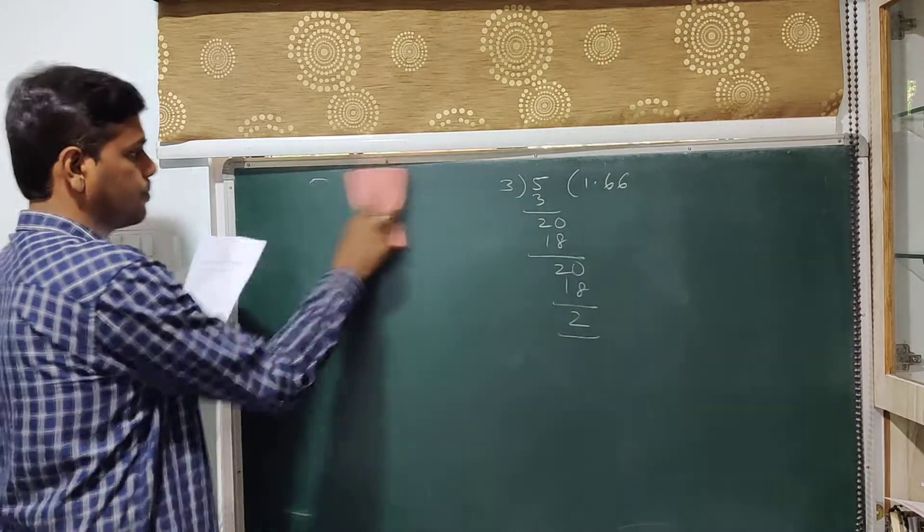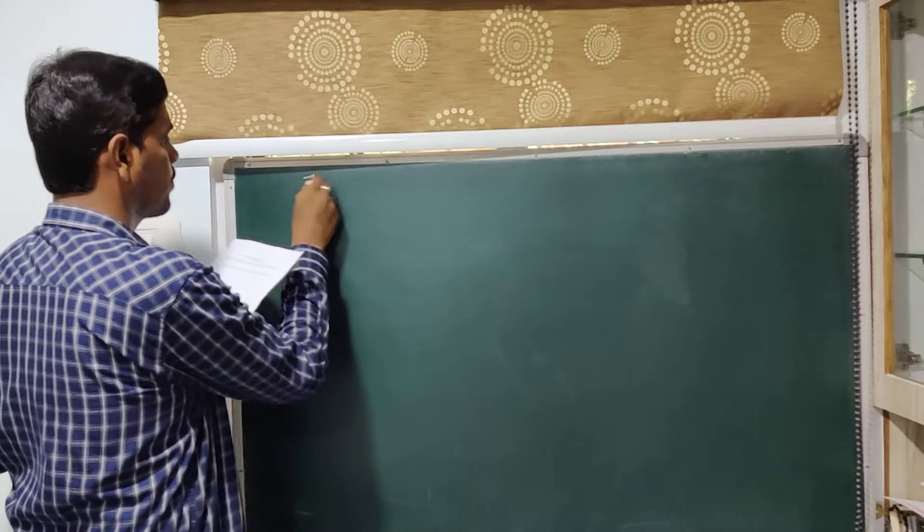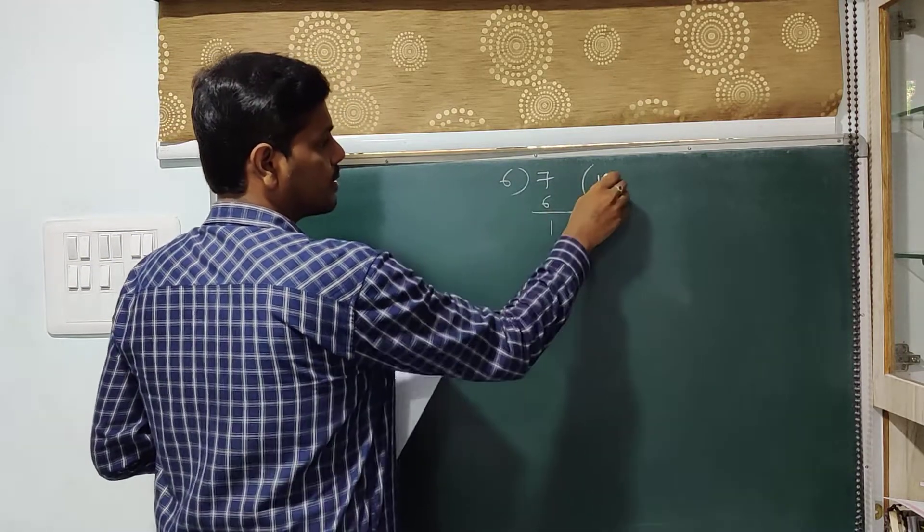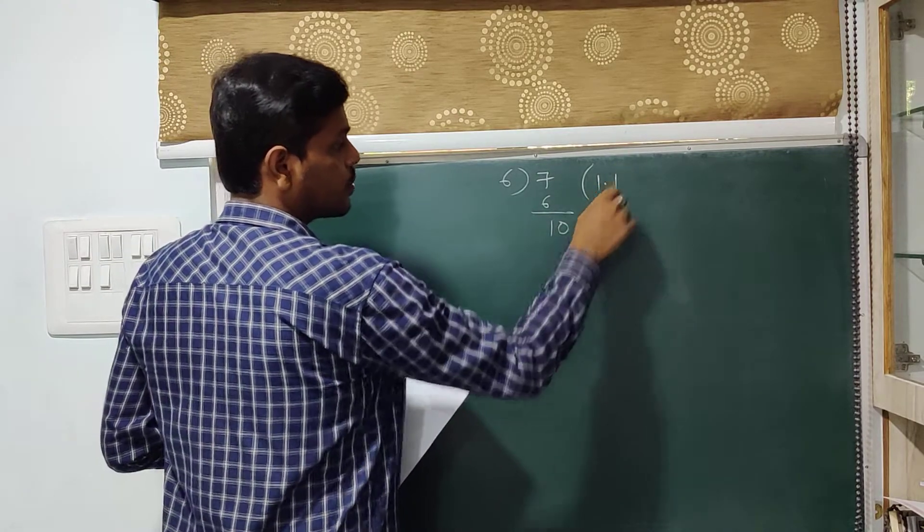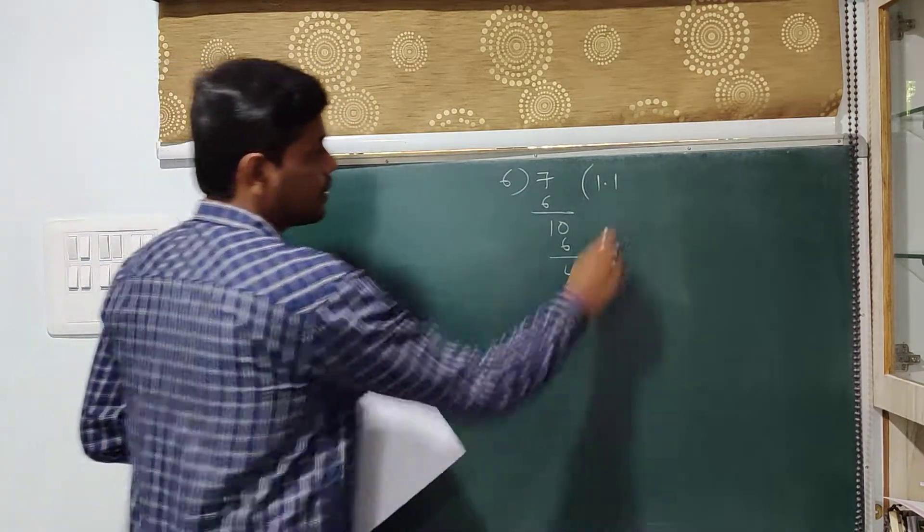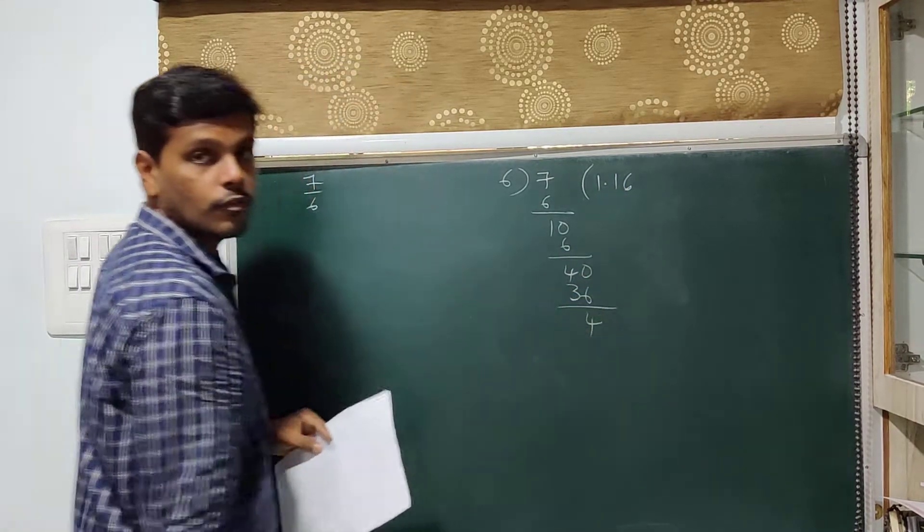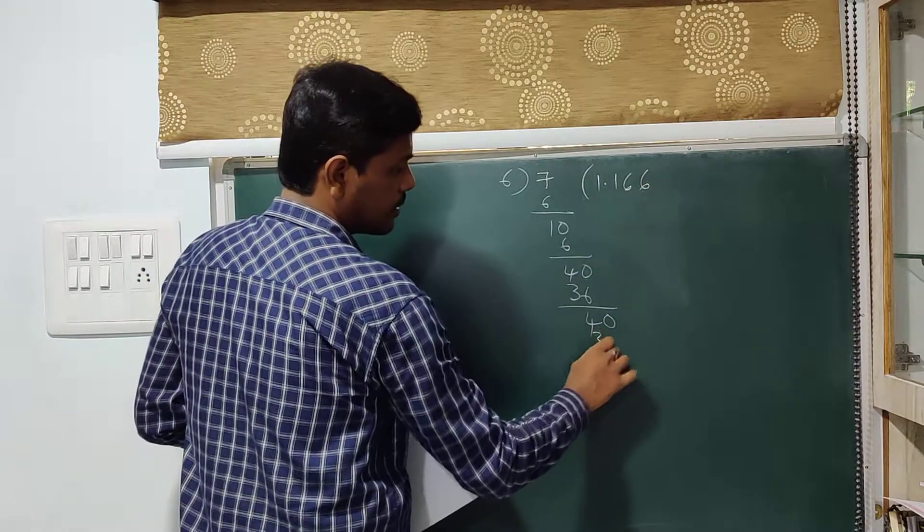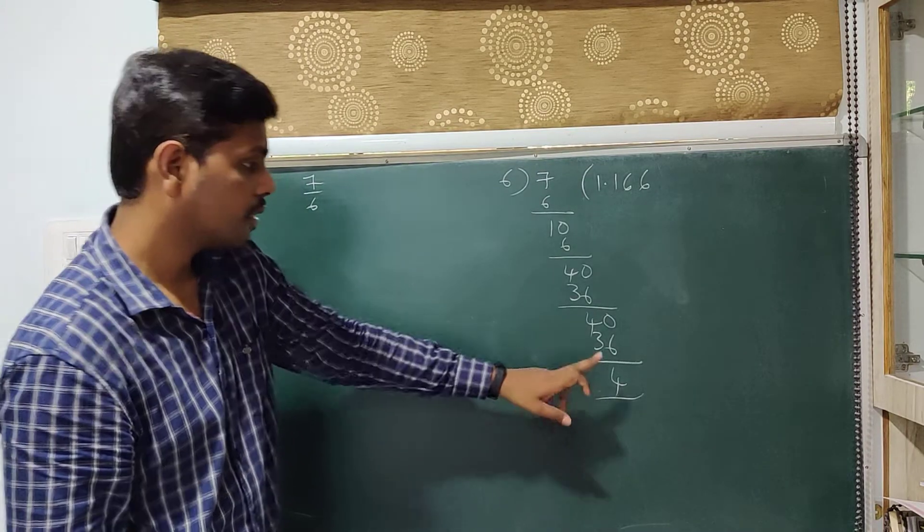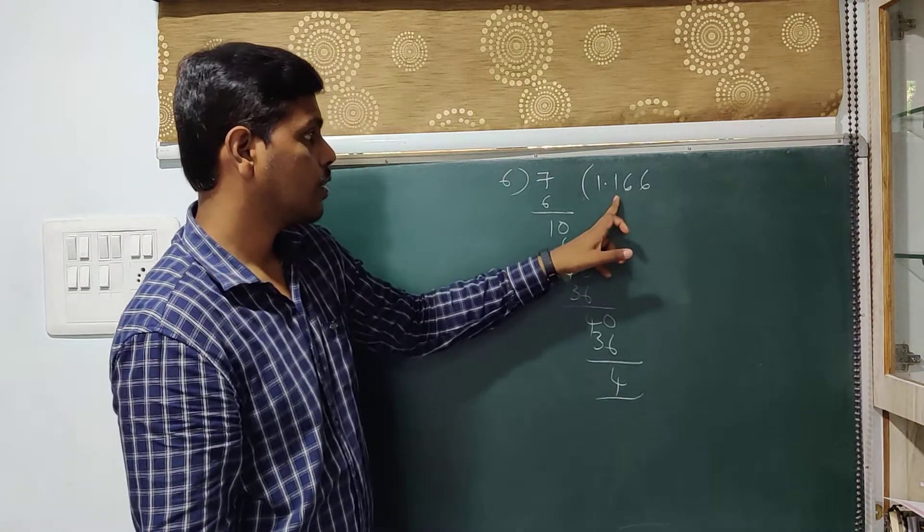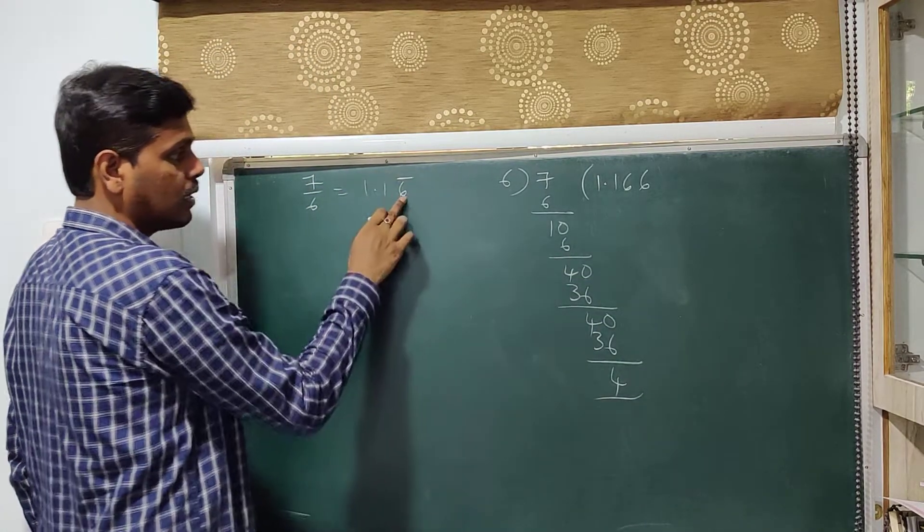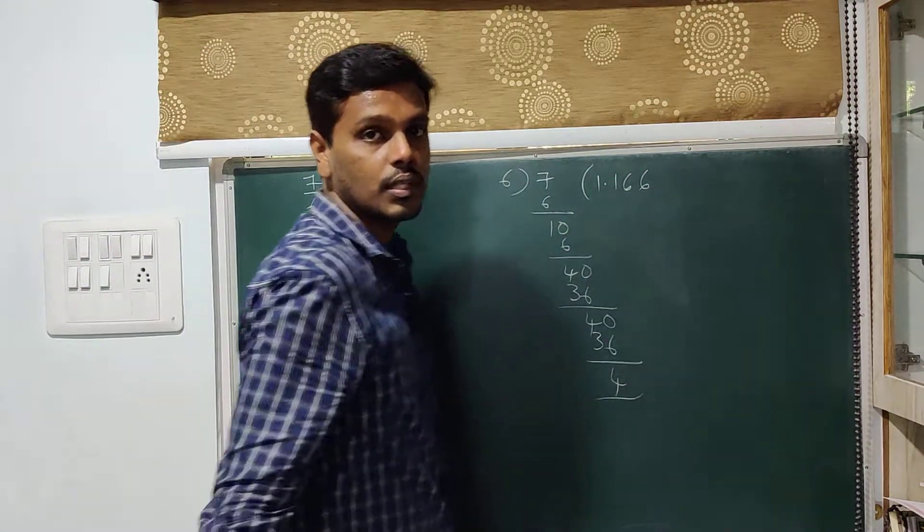Next, 7 by 6. 7 over here, 6. So 1 times 6 is 6. Left over is 1. And 1 is less than 6. Take a point. When you take a point you can take 0 over here. Then 1 times 6 is 6. Remainder is 4. 4 is less than 6 again. Since you have taken a point you can take 0. 6 times 6 is 36. Left over is 4. You have a point. You can take 0. Again 6 times 6 is 36. The left over is 4. If you can see, 4 is repeating continuously. That is we are arriving at remainder 4 repeatedly. And consequently we have 6 being repeated over here. Hence we can say that 7 by 6 is 1.16 bar. Now the bar is only for 6 because only 6 is repeating continuously here.